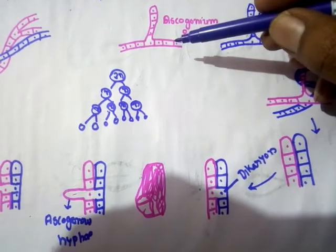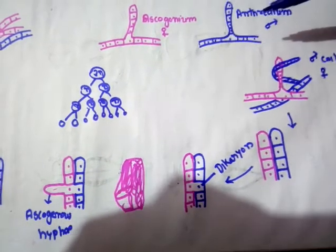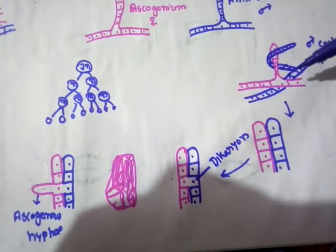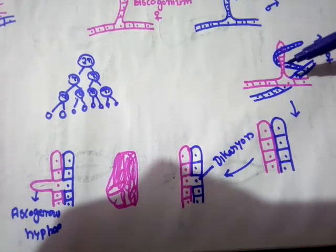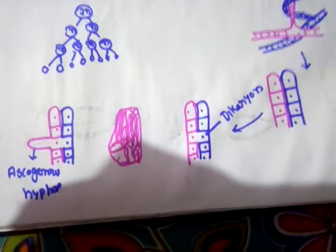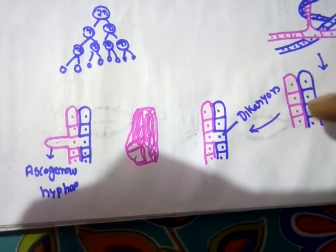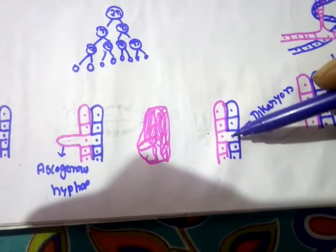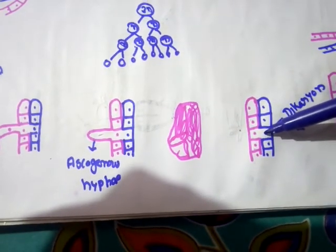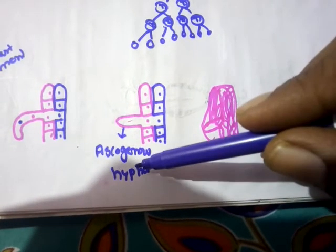In summary: in the reproductive season, the ascogonium develops on the negative strain hyphae and the antheridium on the positive strain hyphae. The antheridium coils around the ascogonium, creating physical proximity between these two sex organs. The wall between one compartment of the antheridium and one of the ascogonium dissolves, resulting in the production of a dikaryon stage — a single cell with two nuclei.